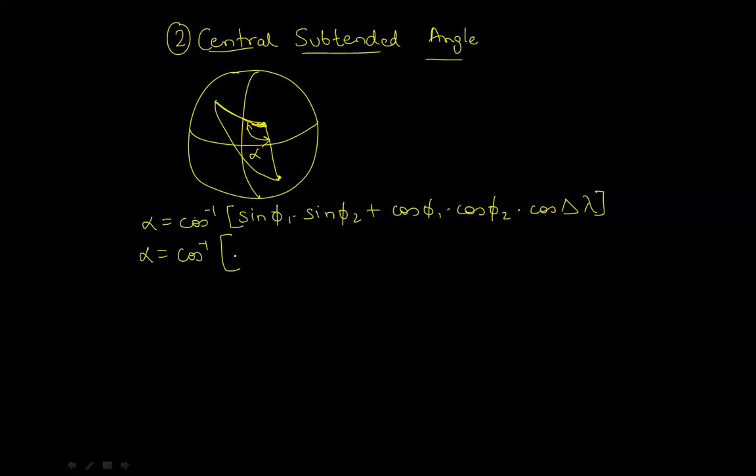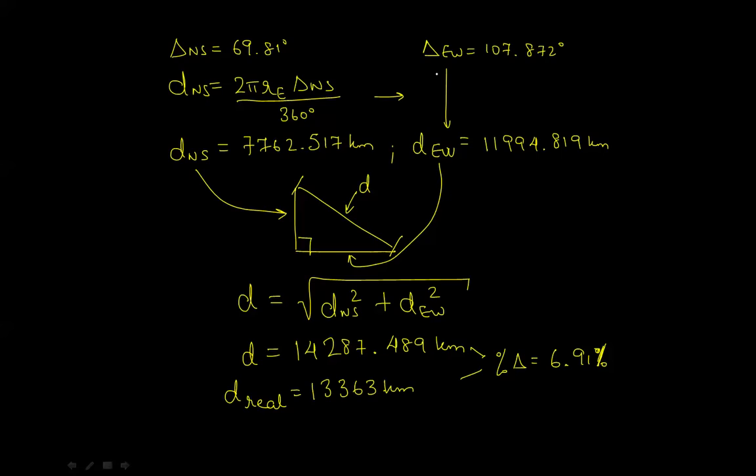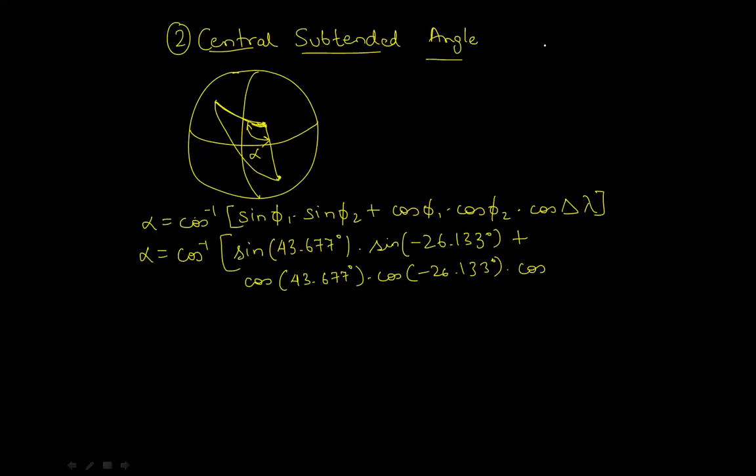What would the central subtended angle equation turn out to be? It will be much simpler if you write down every step of the way. φ1 is 43.677 degrees, sine φ2 is -26.133 degrees. It is important to keep the signs, otherwise the sine and cosine will come out to be the wrong sign. Multiply by cosine 43.677 degrees, multiply by cosine -26.133 degrees, multiply by cosine of delta λ, the difference in longitude which is 107.872 degrees. If you perform the calculation, alpha will come out to be 120.228 degrees, which is now easy to calculate the great circle distance from.